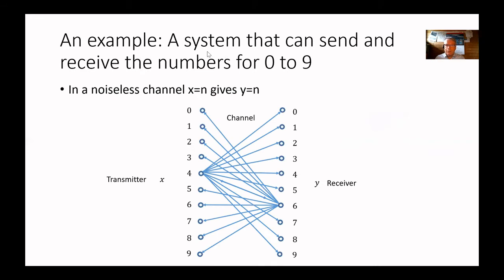Here is an example: a system that can send and receive the numbers from zero to nine. If the system is noiseless, x equals n gives y equals n. That means, for instance, if you are sending one you will receive one, if you are sending seven you will receive seven — that is a noiseless channel. But if the channel is noisy, you have a transmitter x, and for instance sending four, there is a possibility that you can receive either zero, one, two, three, four, five, and up to nine with different probabilities.